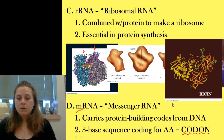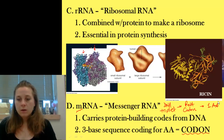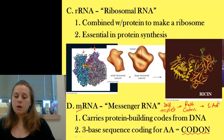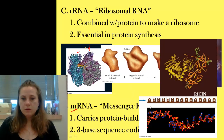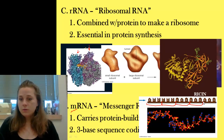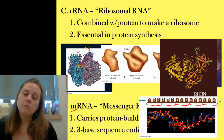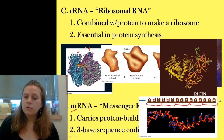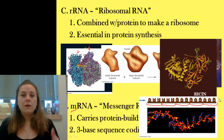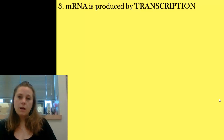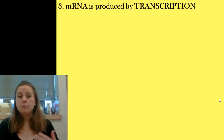A DNA triplet is equivalent to an RNA codon, which then equals one amino acid. Here's a single-stranded piece of RNA showing each one of those codons. Note that you don't see any thymine present because there isn't any — there's no thymine RNA nucleotide; there's only uracil. We still have adenine, guanine, and cytosine. Messenger RNA in particular is produced by a process called transcription.